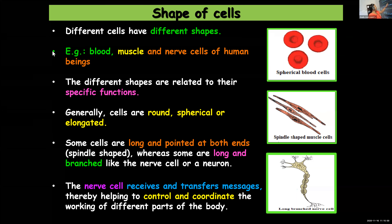A group of nerve cells will form nervous tissue, which you will learn more about in class 9. Nervous tissues are present in the brain, spinal cord, and so on. For now, you need to know only the function of the nerve cell.